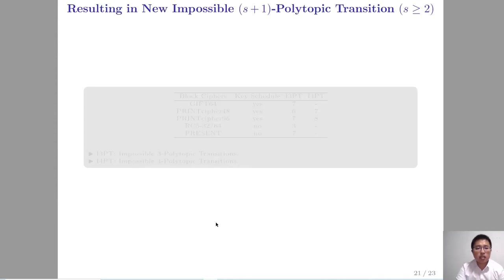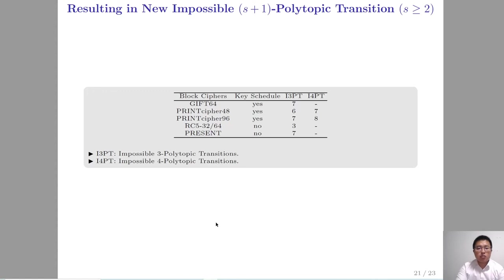In the aspect of finding new impossible s-plus-1 polytopic transitions, we apply our tool to GIFT, PRINT cipher, RC5, and PRESENT cipher. For GIFT, we search i-impossible 3-polytopic transitions considering the key schedule in the related-key setting. For PRINT cipher, we search i-impossible 3-polytopic and 4-polytopic transitions considering the key schedule in the related-key setting. For RC5 and PRESENT, we search i-impossible 3-polytopic transitions where round keys are chosen independently. From the results, all the distinguishers we find can cover more rounds than their corresponding impossible differentials.